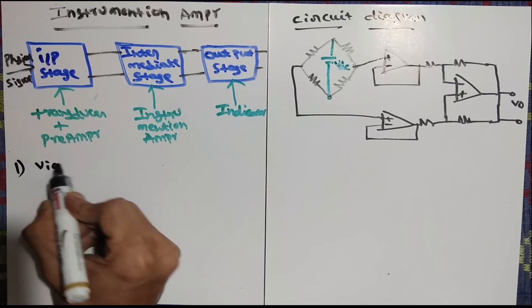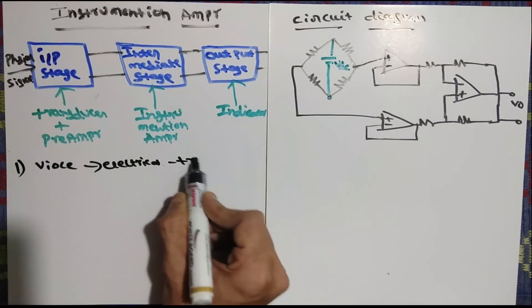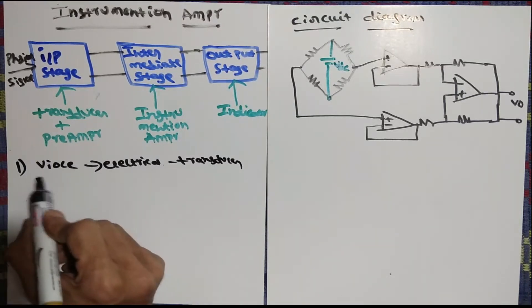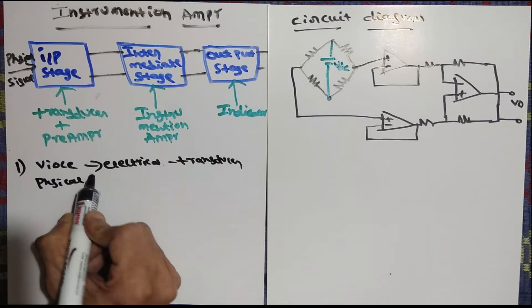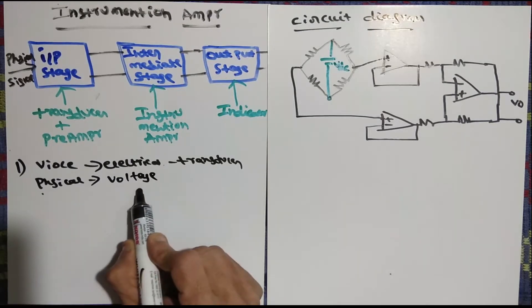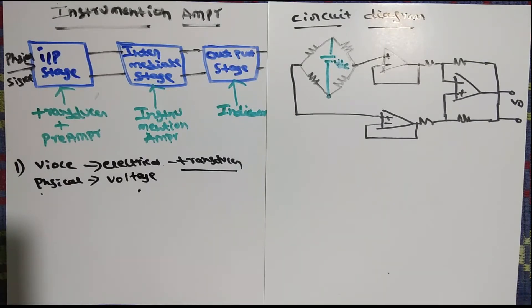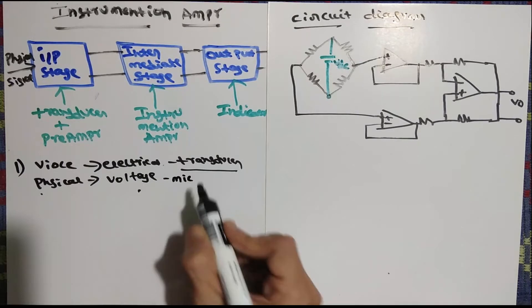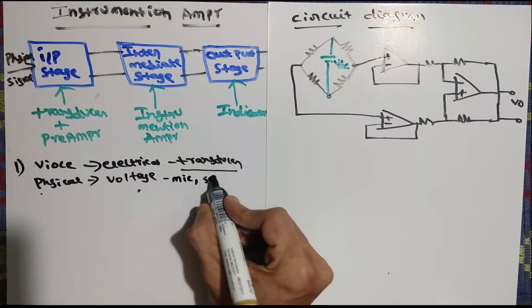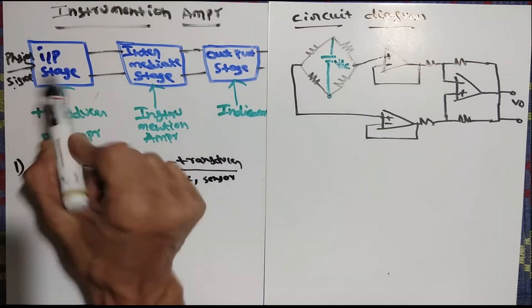This process is known as a transducer. A transducer converts physical signals into electrical signals. Your voice, temperature, pressure — any physical quantity — is converted to voltage or current. A microphone is the best example of a transducer. Temperature sensors, gas sensors, and all types of sensors are usually transducers.